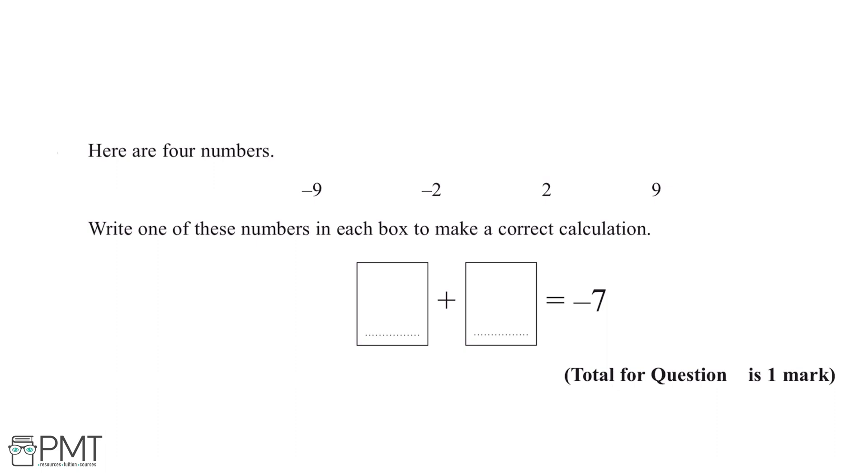What we can see from this question is we have four numbers and we need to add two of them together to make minus seven. The best way to do this is to use trial and error.